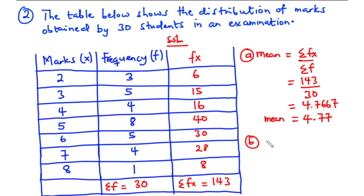Now for the mode. The mode is the value that occurs most frequently. From the table, you can see that 5 occurs the most number of times — that is 8 times. So the mode is 5.